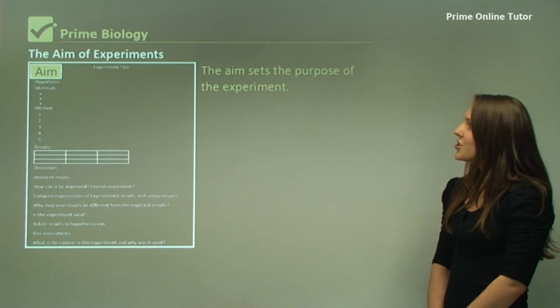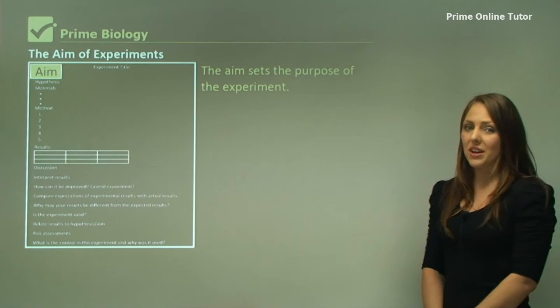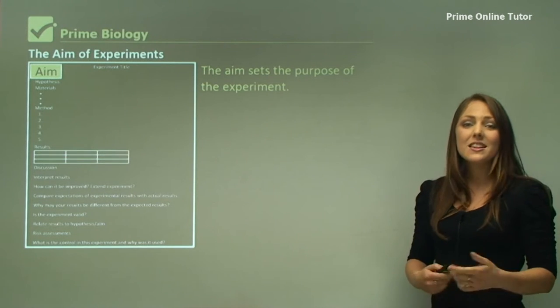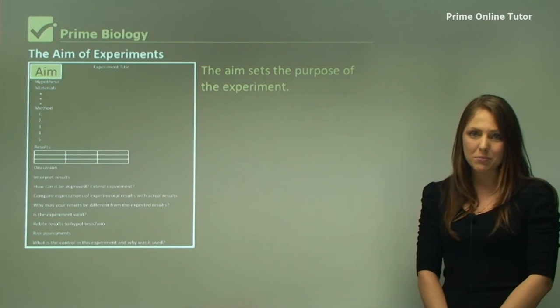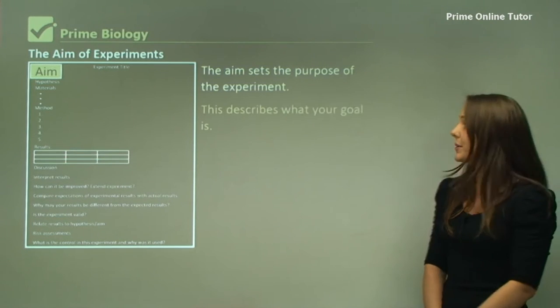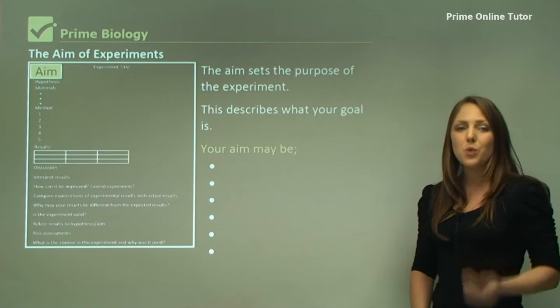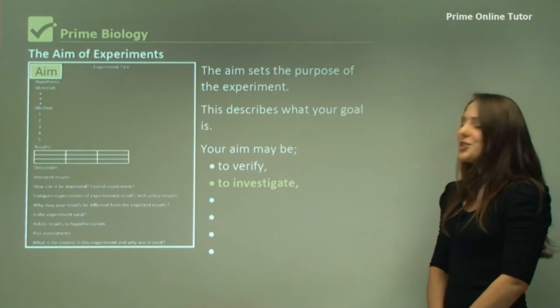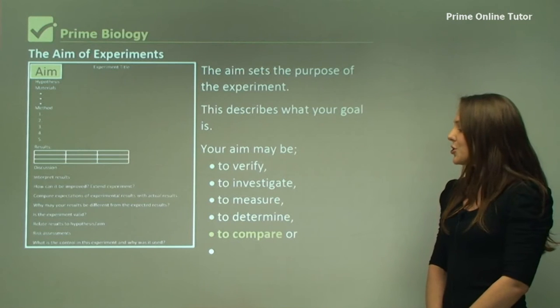You do not need an aim for every experiment. Sometimes it's more appropriate to have an aim rather than a hypothesis. An aim describes what your actual goal is, and you can use words to begin your sentence such as: to verify, to investigate, to measure, to determine, to compare, or to calculate.